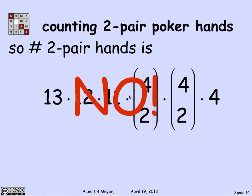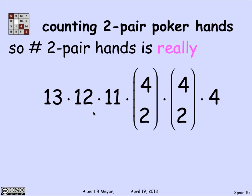Now that I realize the mapping from these six-tuples — which I've counted correctly — to two-pair hands is two-to-one, I can fix this formula. By the division rule, all I need to do is divide this number by two, and that is really the answer: the number of two-pair hands.